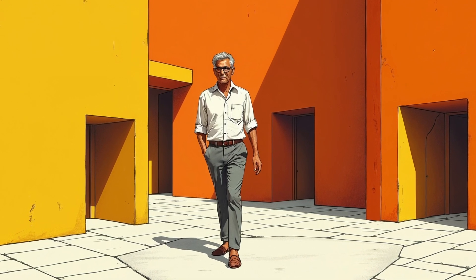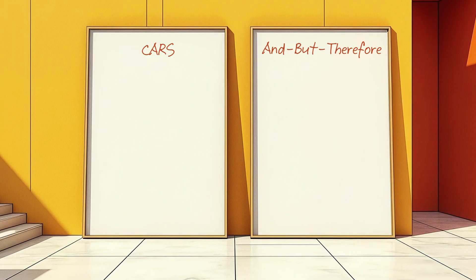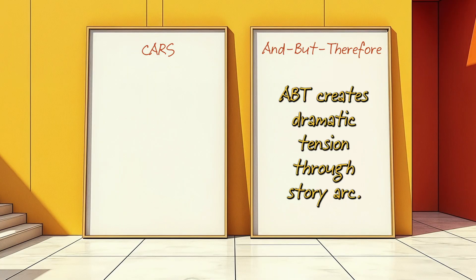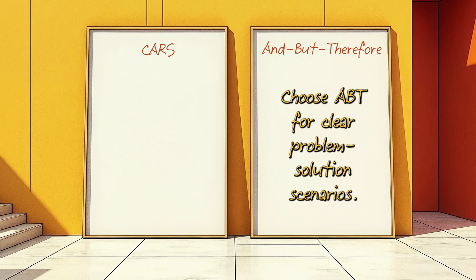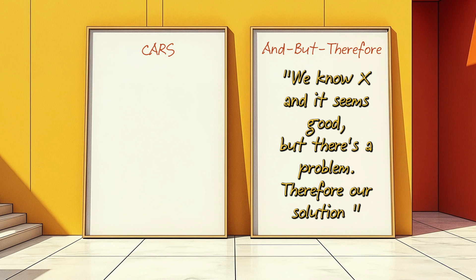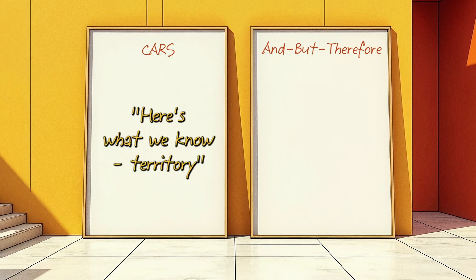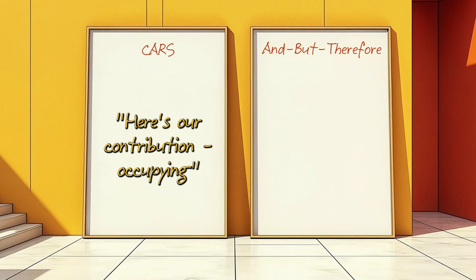Not all narrative structures serve the same purpose, and choosing between frameworks isn't easy. So, when should we use CARS? CARS vs. ABT: ABT creates dramatic tension through story arc, while CARS builds scholarly credibility. Choose ABT for clear problem-solution scenarios; choose CARS for positioning within literature. ABT says: we know X and it seems good, but there's a problem, therefore our solution. CARS says: here's what we know (territory), here's what's missing (niche), here's our contribution (occupying).